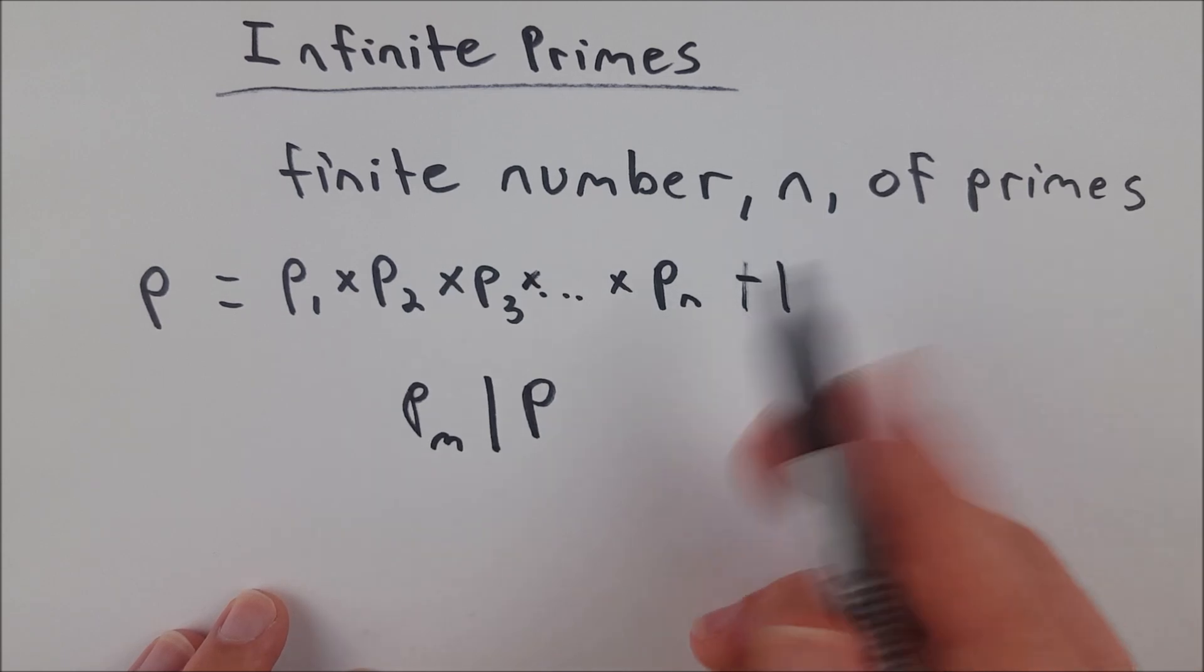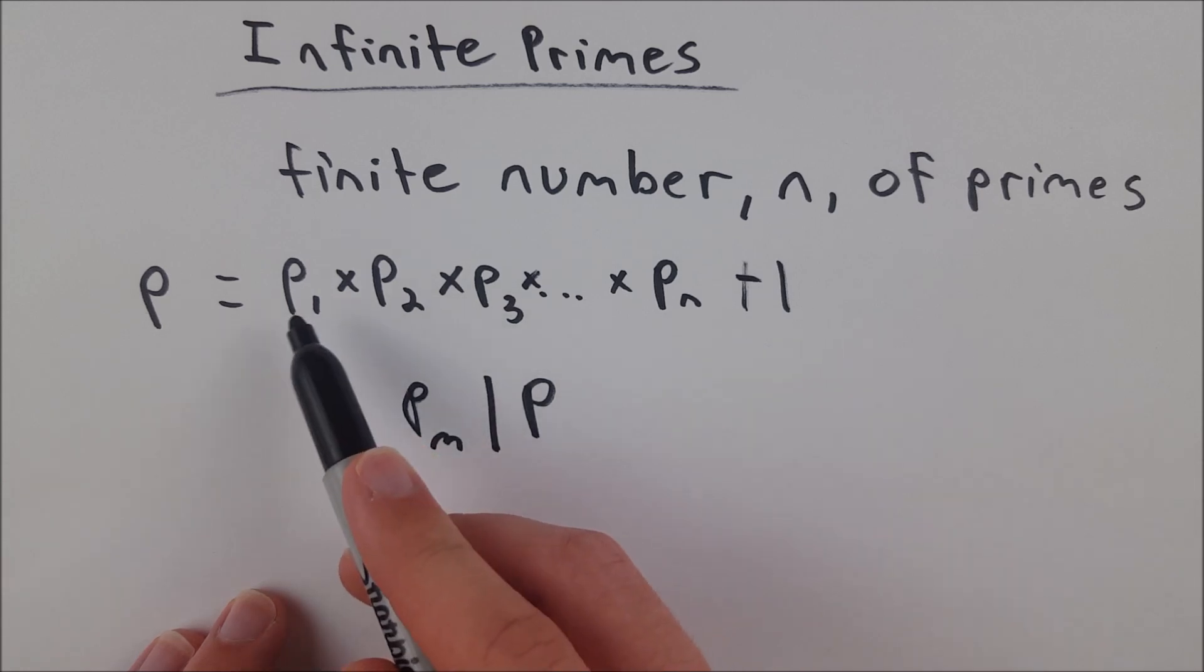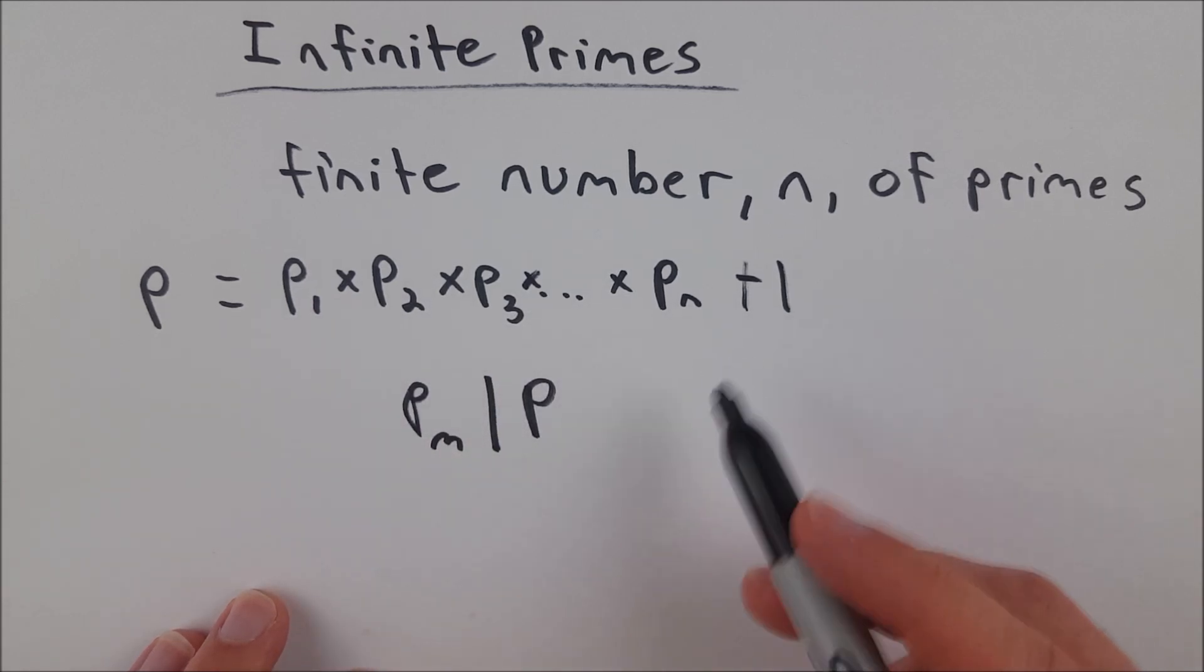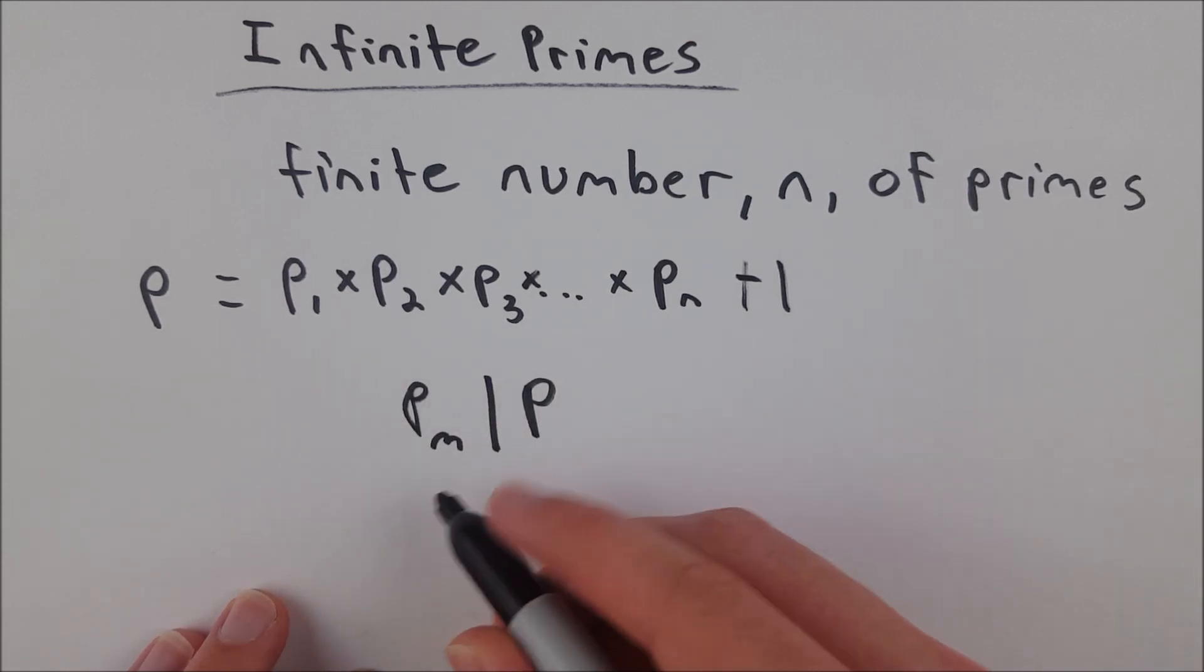However, we see that no matter what prime number we divide P by, we will have a remainder of 1, because P is defined by being a multiple of every single prime plus 1. So it's one more than a multiple of any prime number.